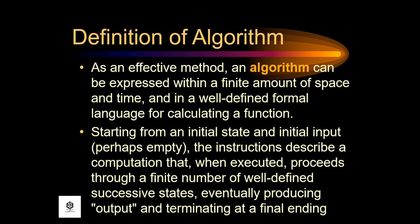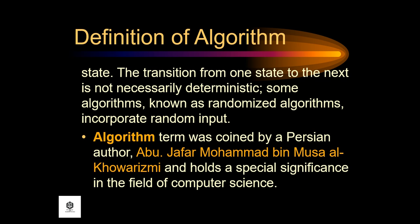Starting from an initial state and initial input, perhaps empty, the instructions describe a computation that, when executed, proceeds through a finite number of well-defined successive states, eventually producing output and terminating at a final ending state. The transition from one state to the next is not necessarily deterministic. Some algorithms, known as randomized algorithms, incorporate random input.